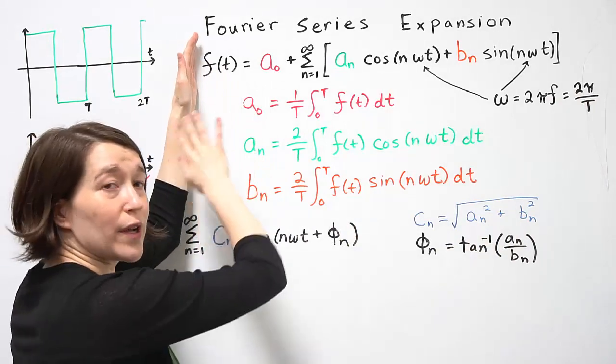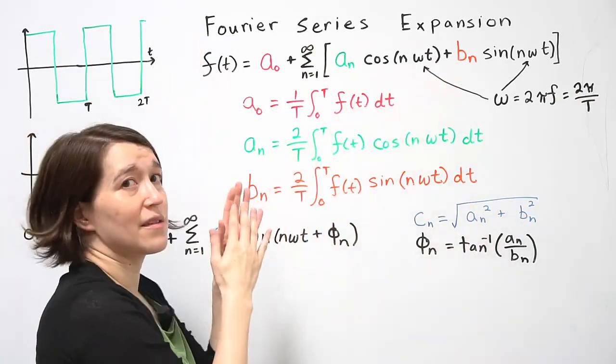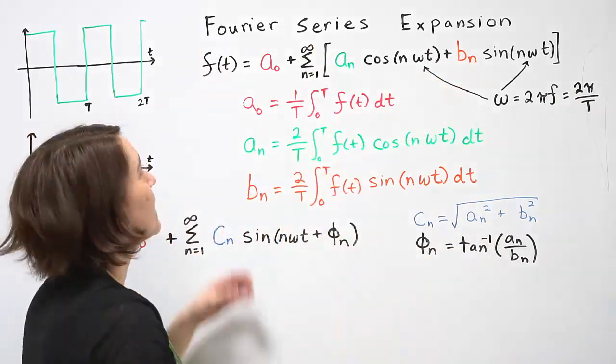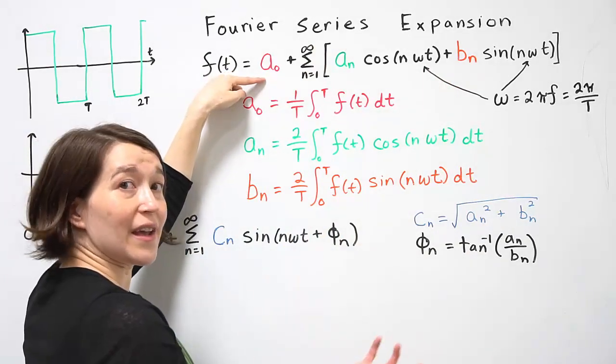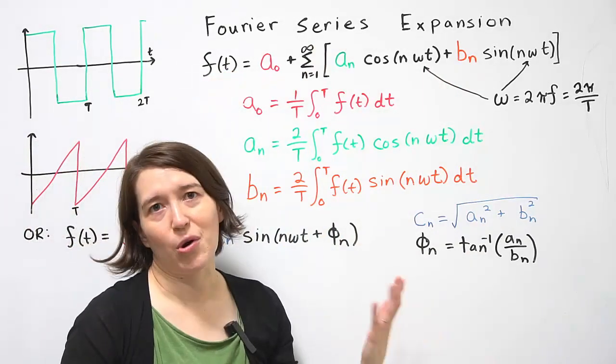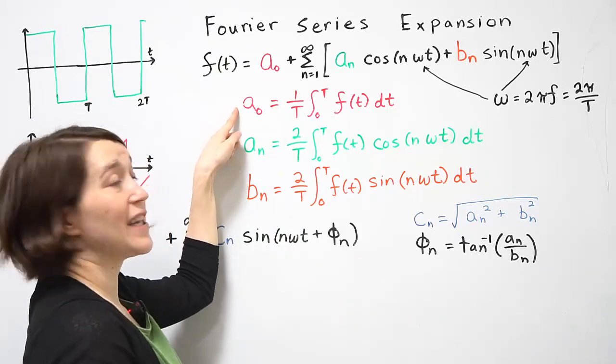Here is the definition of the Fourier series expansion, and let's go through each part. a₀ is a coefficient, it's called the DC coefficient, and it's defined here.